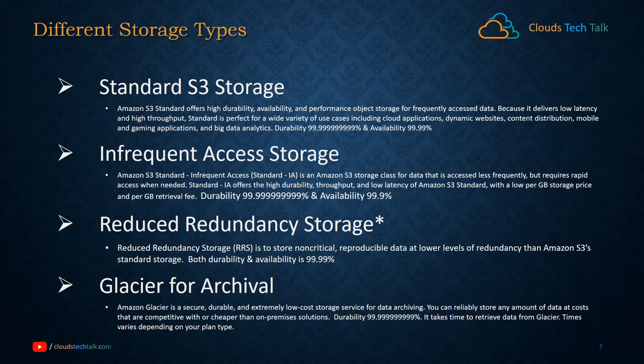The second storage type is infrequent access storage. Amazon S3 Standard Infrequent Access, called Standard IA, is an Amazon S3 storage class for data that is accessed less frequently but requires rapid access when needed. Standard IA offers high durability, throughput, and low latency of Amazon S3 standard with a lower per-GB storage price and a per-GB retrieval fee. Durability is again 11 nines, but availability is reduced to 99.9%.